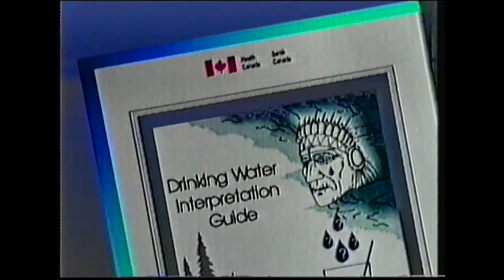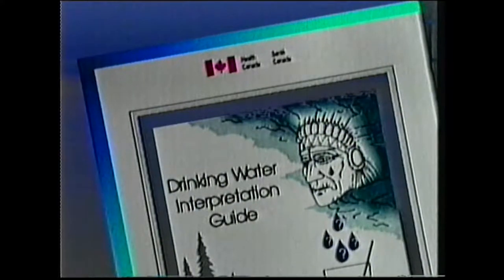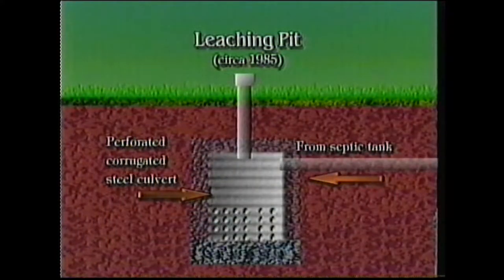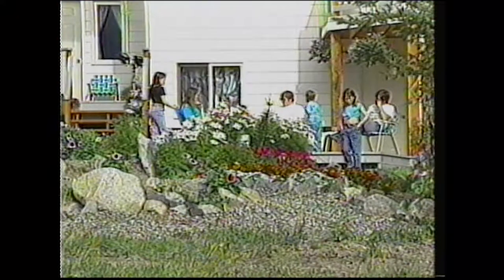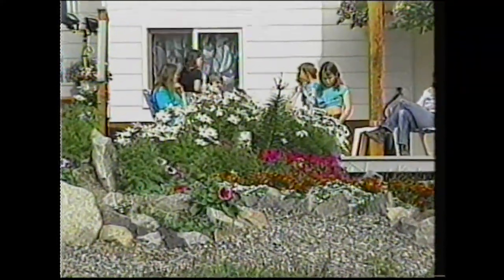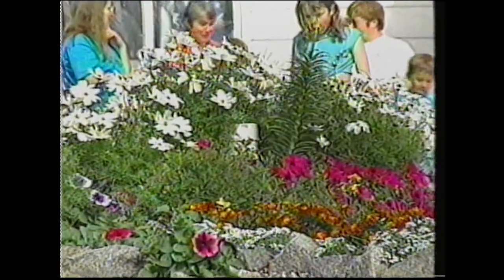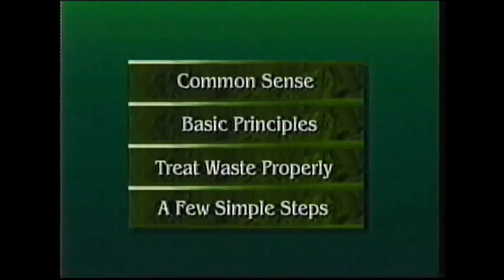It's only been a few short decades since governments have passed environmental laws. As a result, the ways in which we dispose of and treat sewage have also changed. In the past, rural septic systems which were not based on engineering principles often failed, particularly in tight soils. Today, many factors go into the development and design of a good working rural septic system. The best approach involves using common sense, understanding some basic principles including the need to treat waste properly, and the ability to follow a few simple steps.